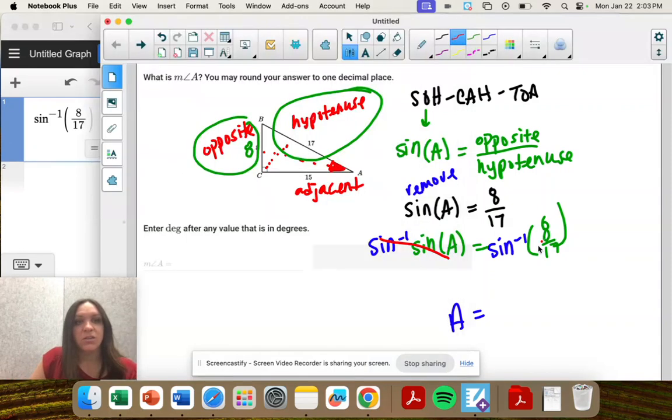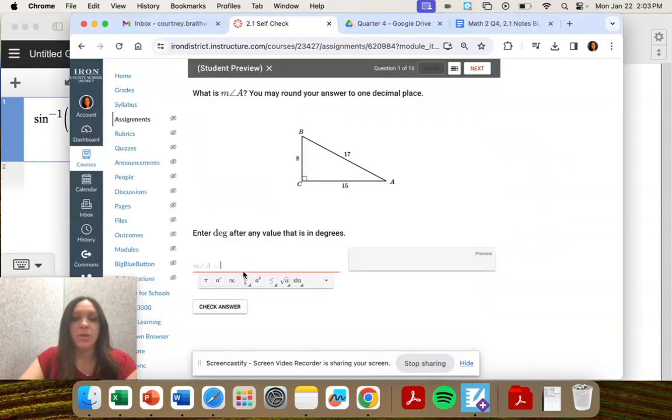And that's our angle, 28.1. I'm rounding to one decimal place, 28.1 degrees.